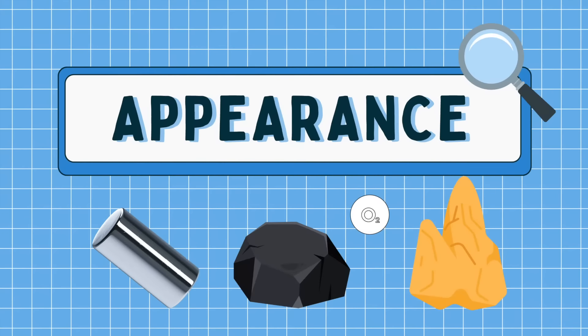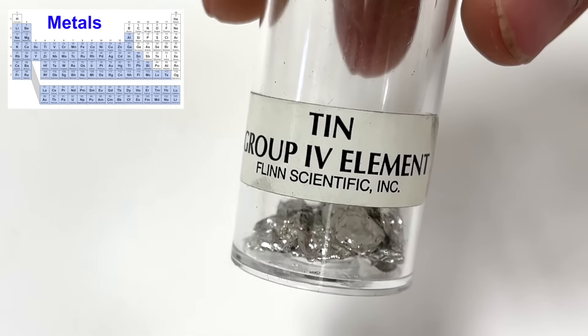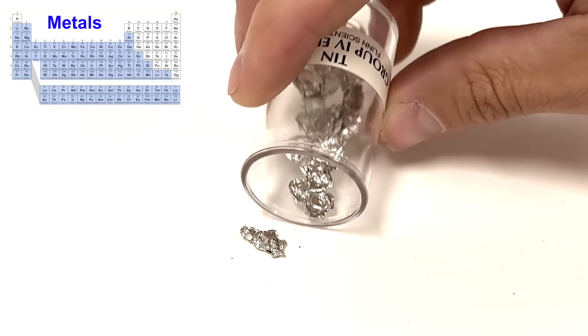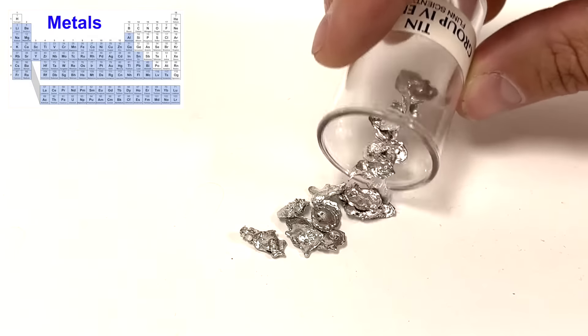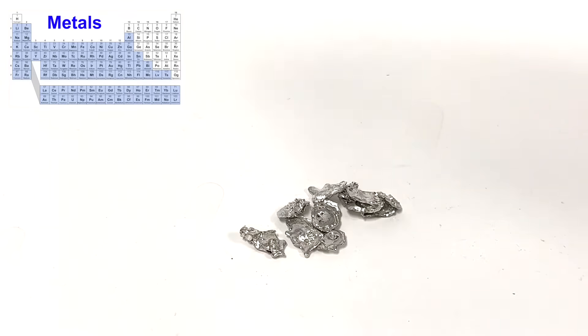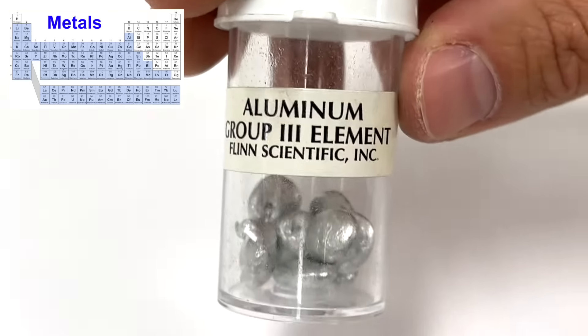Let's first take a look at their appearance. When you look at a metal, you've probably noticed that they reflect light a lot, so they're very shiny. This means that they have a metallic luster to them.